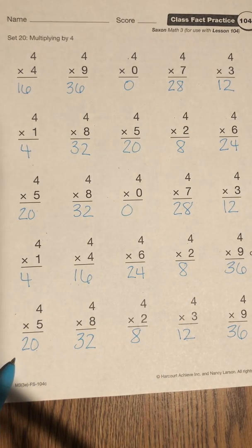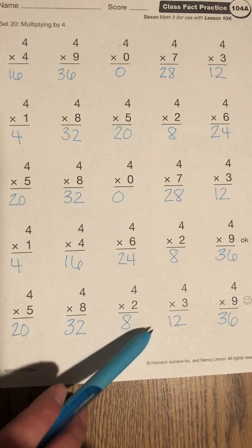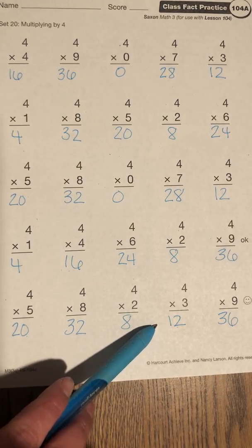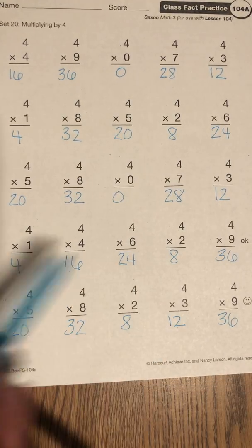4 times 5 is 20. 4 times 8 is 32. 4 times 2 is 8. 4 times 3 is 12. 4 times 9 is 36.